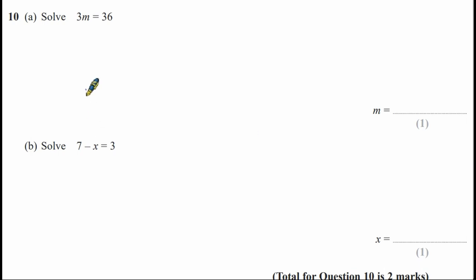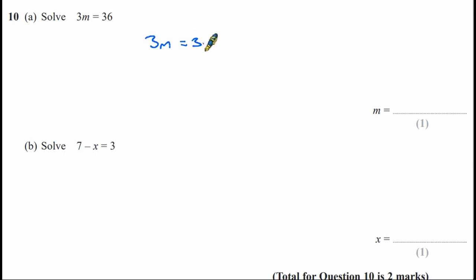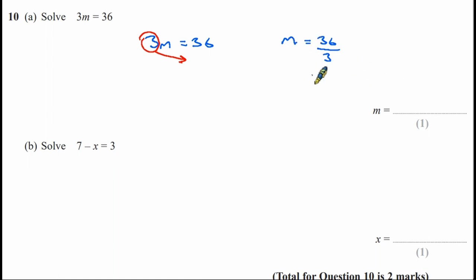Question 10A: solve 3M equals 36. I prefer to rearrange to get M isolated. Starting with 3M equals 36, I move the 3 to the other side — currently a multiplier, it becomes a divider. So M equals 36 divided by 3, therefore M equals 12.